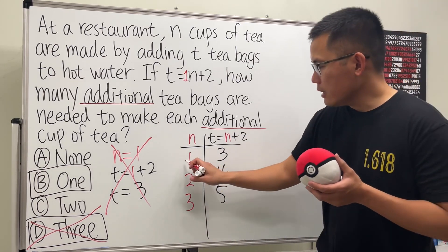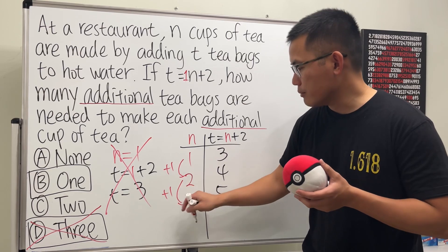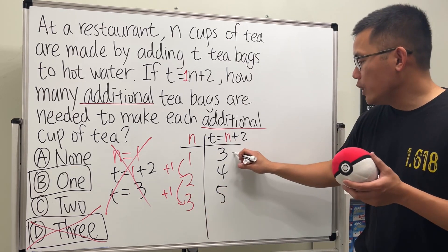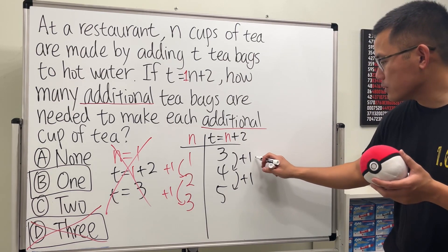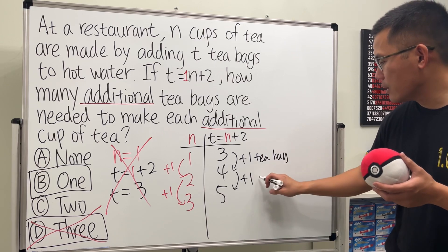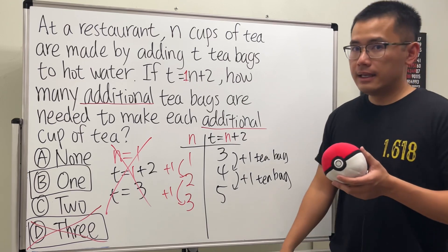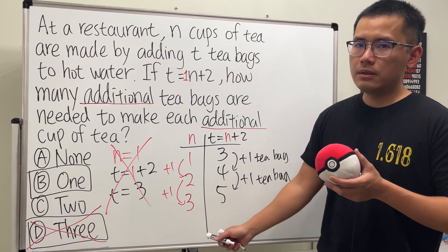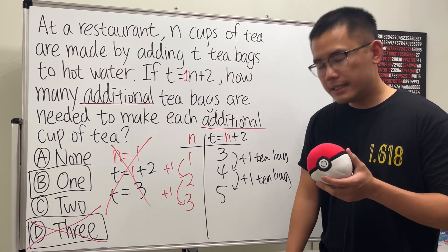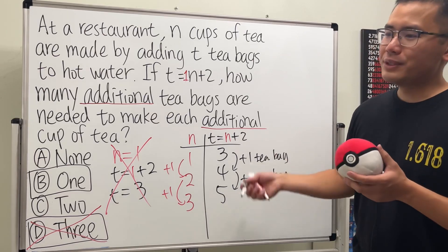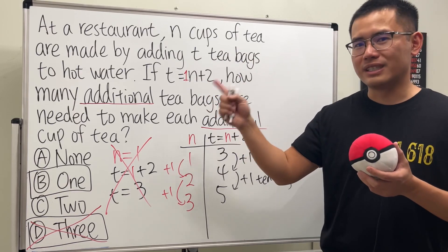Have a look — each additional cup of tea that we have to make, we will need 1 tea bag. So if you want to make 1 more cup of tea, you have to give me 1 more tea bag. That's the answer. So be really careful with the wording — that's how they will get you. Go ahead and try the other questions in this playlist.